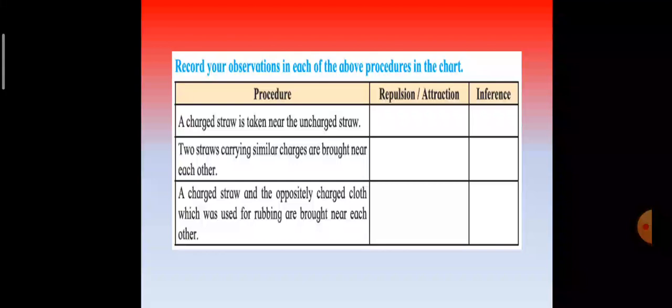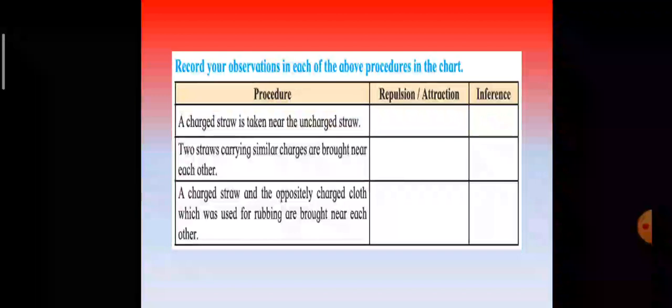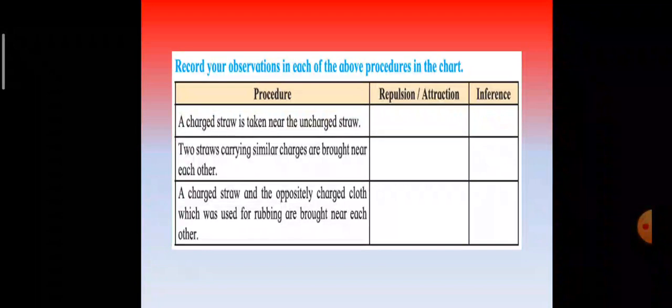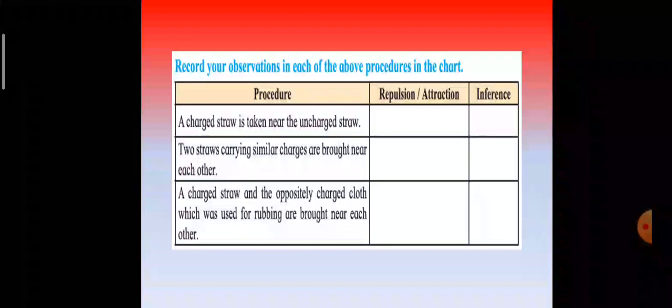What you observe is electrically charged objects attract uncharged objects. There is repulsion between like electric charges. There is attraction between unlike electric charges. Hence, repulsion is used as a test for identifying electrically charged objects.